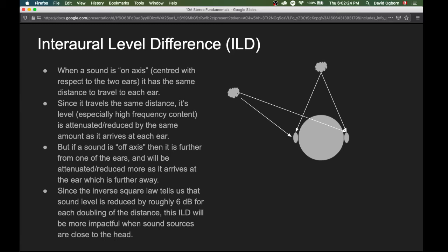This means that this ILD cue is going to be more impactful when sound sources are close to the head. When we're very far away from a sound source, the interaural level differences are not going to be very significant. But when a sound source is close to us, the difference in distances is going to make a big difference to the apparent level at each of those ears.